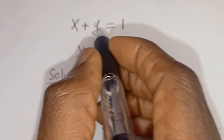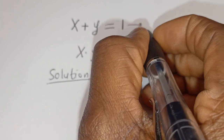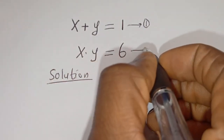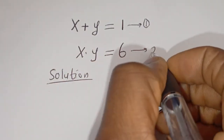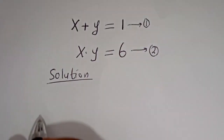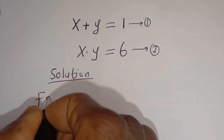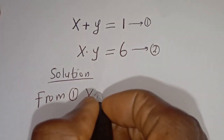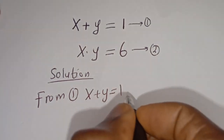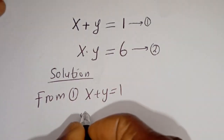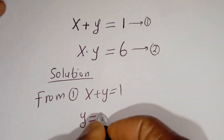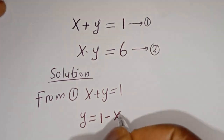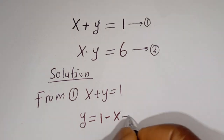We have x plus y is equal to 1 — let's call this equation 1. x times y is equal to 6 — let's call this equation 2. From equation 1, x plus y is equal to 1, then y is equal to 1 minus x — let's call this equation 3.